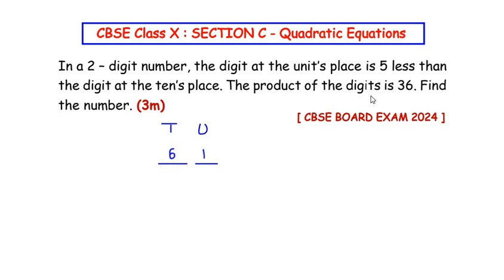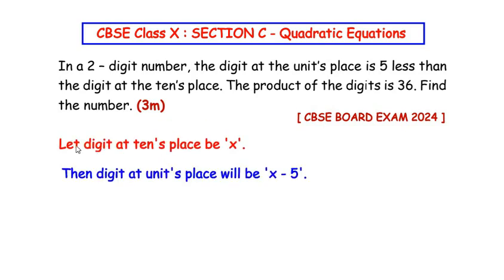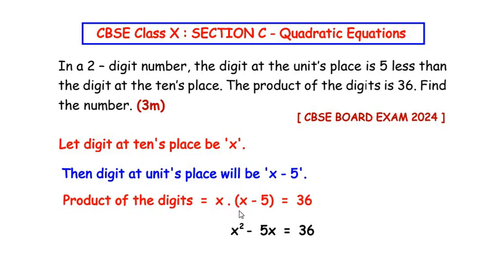The second hint is the product of the digits is 36, meaning when we multiply these two numbers we should get 36. So let the digit at the tens place be x. Then the digit at the units place is going to be 5 less than x, that is x minus 5. The product of the digits gives us: x times (x minus 5) equals 36.